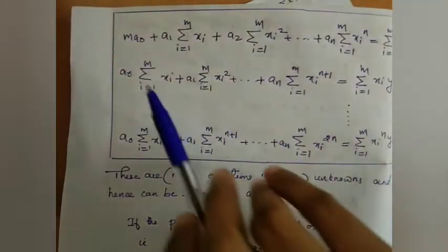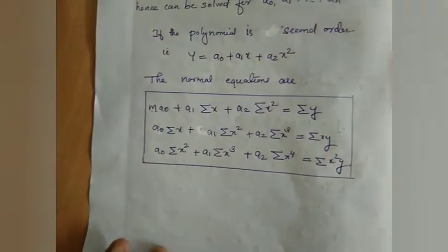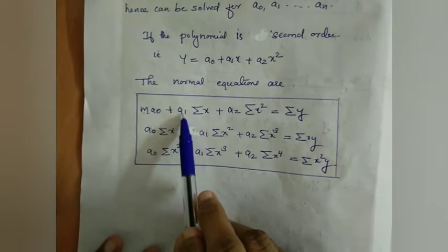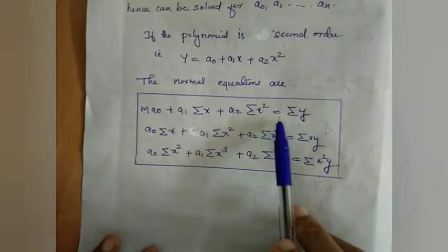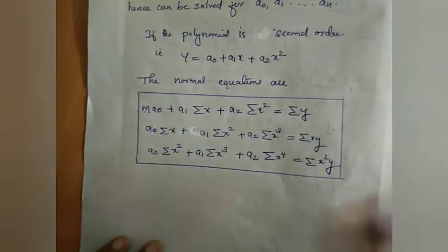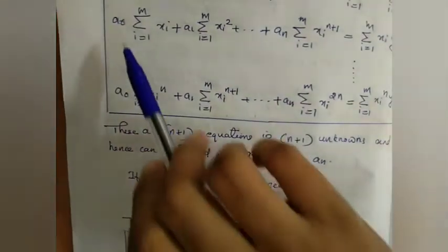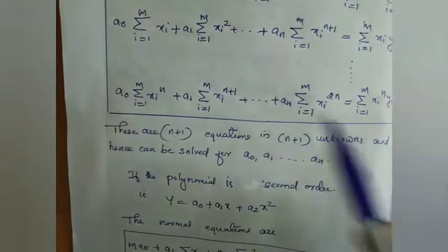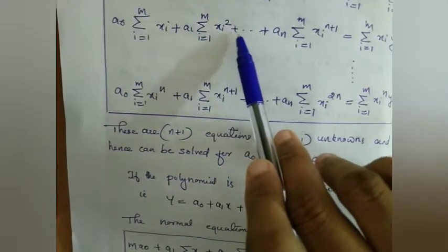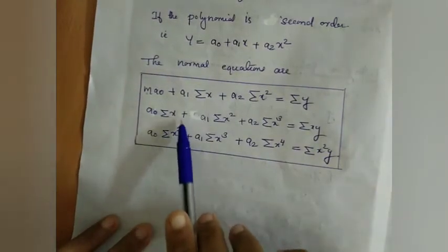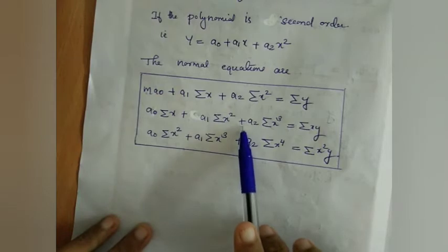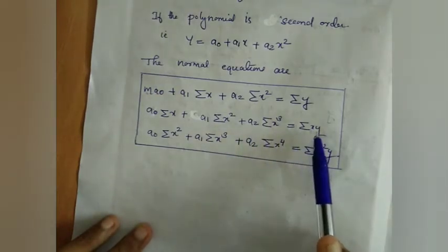For the second degree polynomial, we have three unknowns: a0, a1, and a2. The normal equations are: m·a0 plus a1 times summation x plus a2 times summation x squared equals summation y (first equation); and a0 times summation x plus a1 times summation x squared plus a2 times summation x cubed equals summation x·y (second equation).